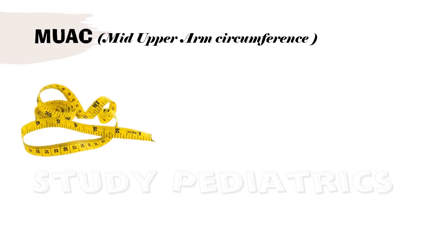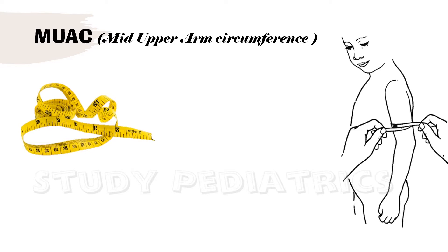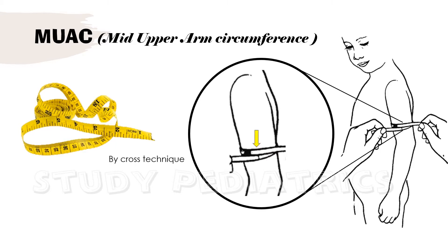Let's begin with the most important index, MUAC, which stands for mid upper arm circumference. We measure the circumference of the arm with the help of an inch tape. One must note that while measuring any circumference in the body, we use this cross technique in which we take some extra length of inch tape and cross it as shown.